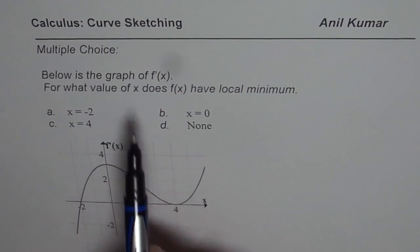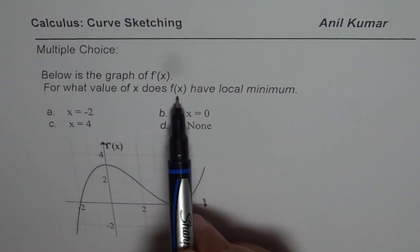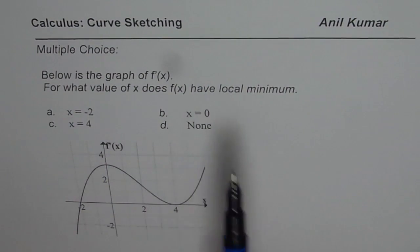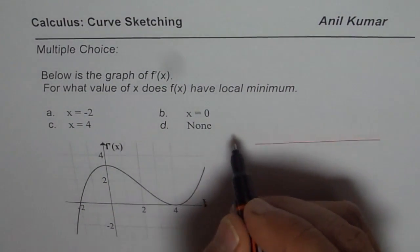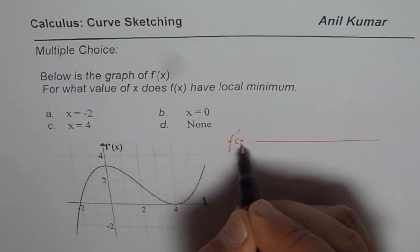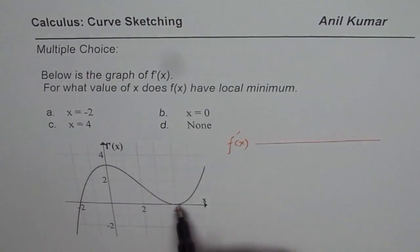For what value of x does the function have a local minimum? You need to analyze the derivative. We are given the graph of the derivative.